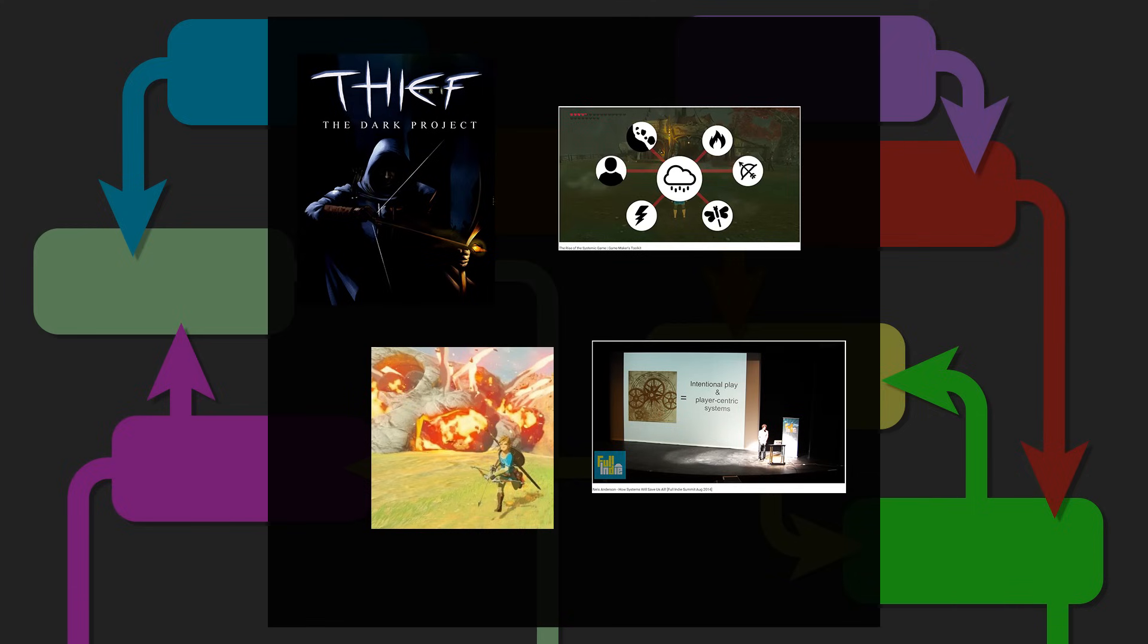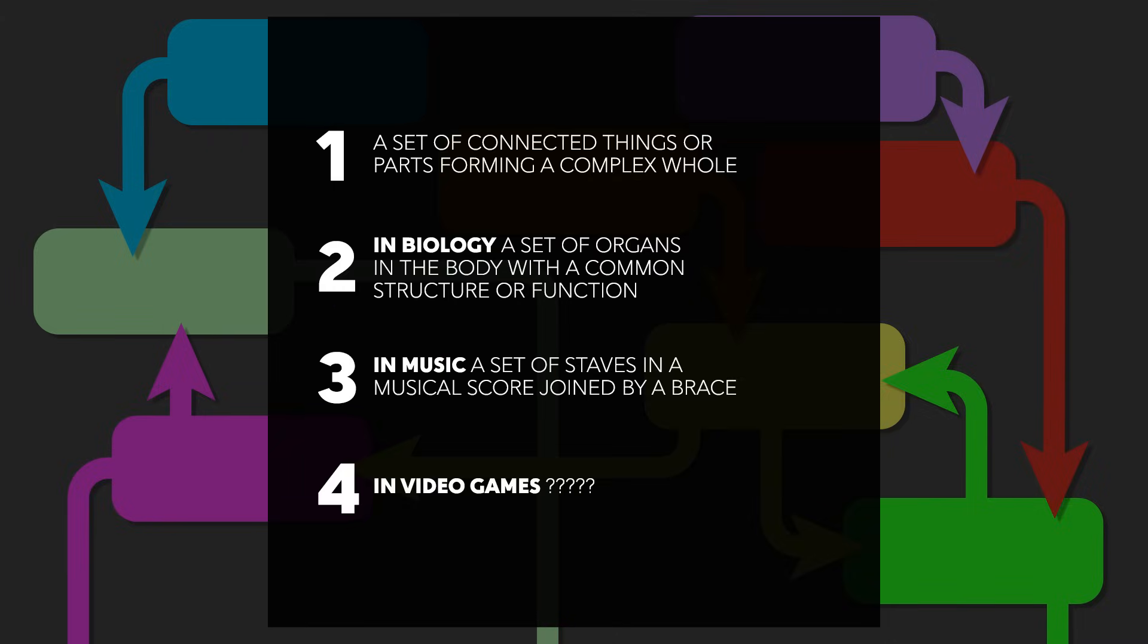There are many videos and articles that talk about systemic games or that discuss the benefits of infusing systems into your game. But no one talks about building a good system or defines exactly what makes a game systemic. And part of that seems to be because there isn't an adequate definition of systems, or at least not a definition that isn't broad or overreaching or overly vague.